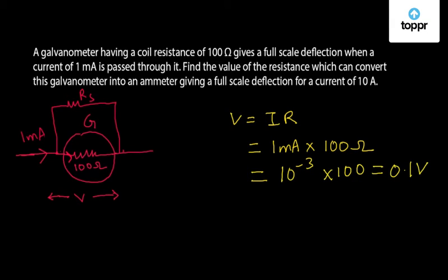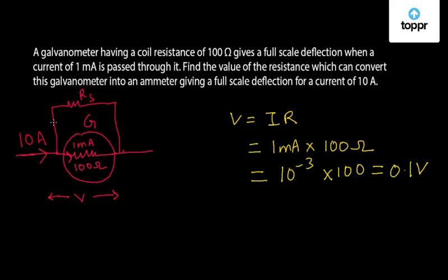In the second case, a 10 ampere current is passing. So if 10 ampere current is passing, the maximum amount of current that can pass through the galvanometer is 1 mA. The rest of the current will pass through the shunt resistance — let us say this current is Is.